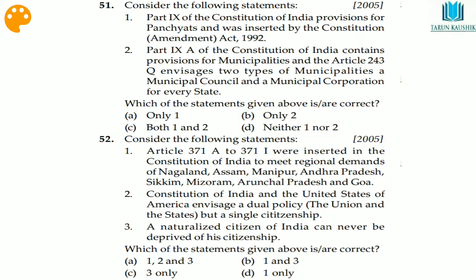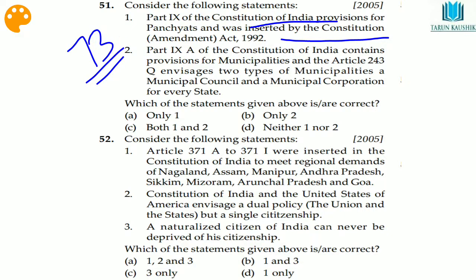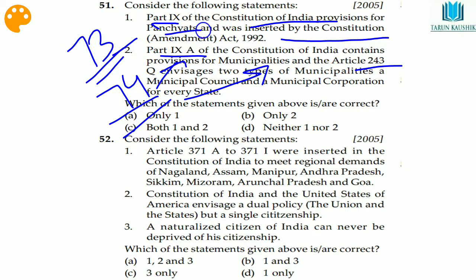Question 51: Part 9 of the Indian Constitution provides for the Panchayati Raj, which was inserted by the 73rd Constitutional Amendment Act, 1992. Part 9A covers municipalities, inserted by the 74th Amendment in 1992-93. Under Article 243, the 74th Amendment covers Part 9A municipalities and the 73rd covers Part 9 for panchayats. Both statements are correct — option C.